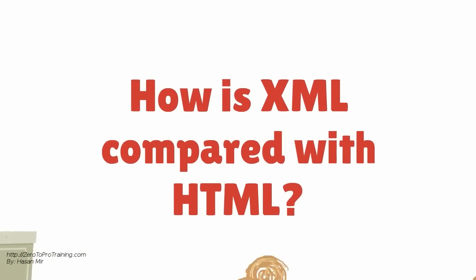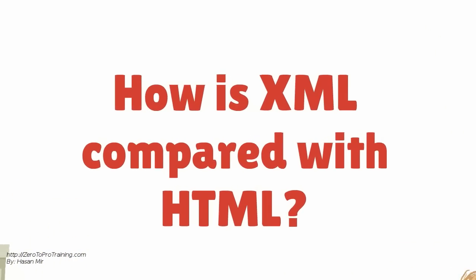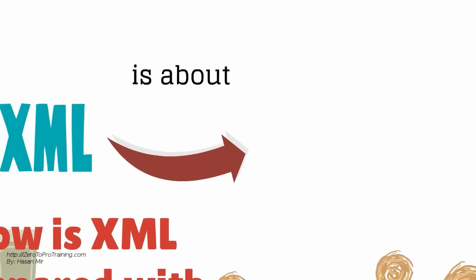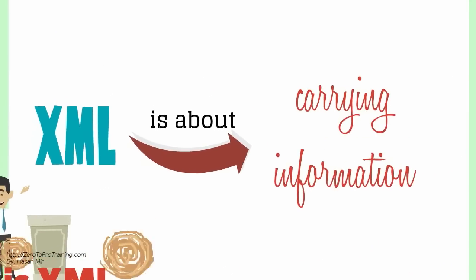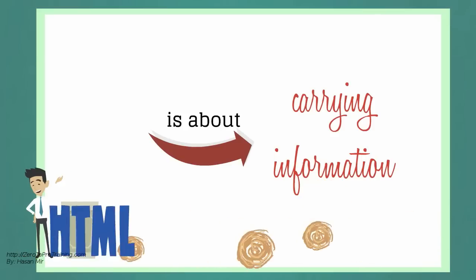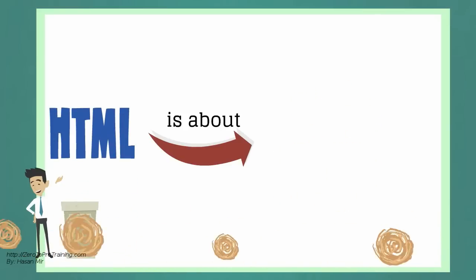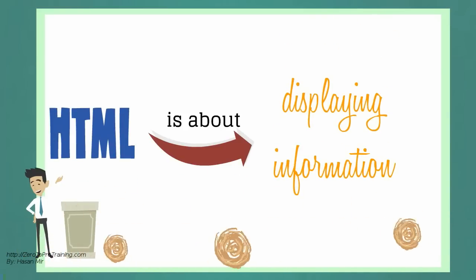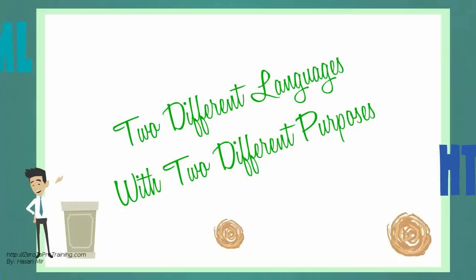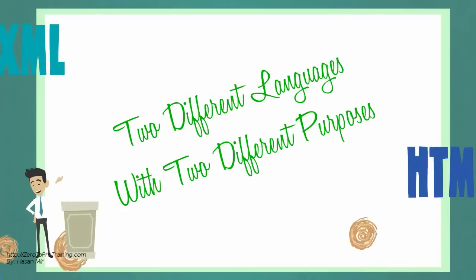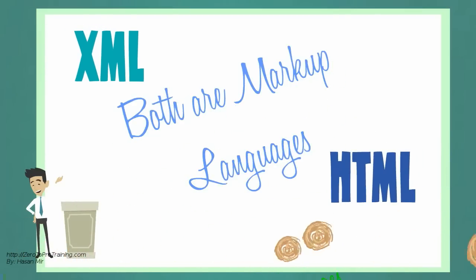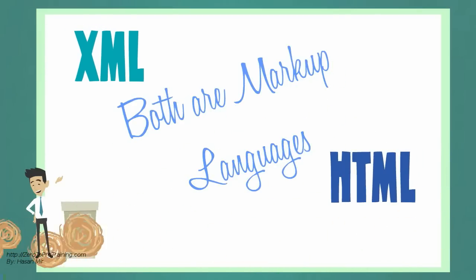How is XML compared with HTML? XML is about carrying information, while HTML is about displaying information in browsers. They are two different languages with two different purposes. However, both are markup languages.